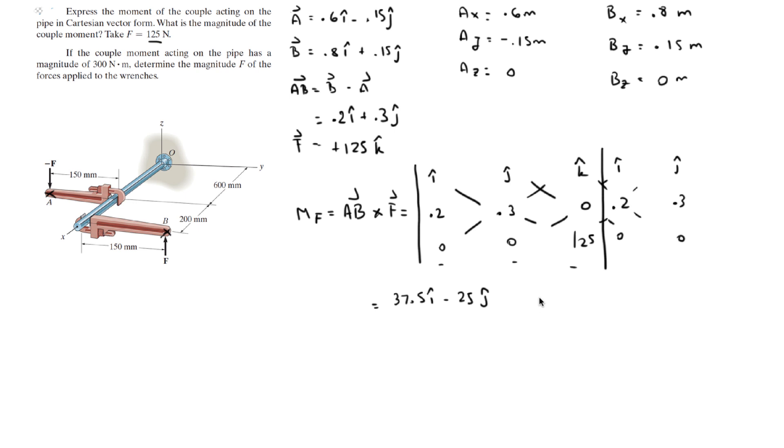And the unit for this is newton meters, because I have the distances in meters and the force is in newtons. So this is the Cartesian vector form of the moment created by the couple moment.